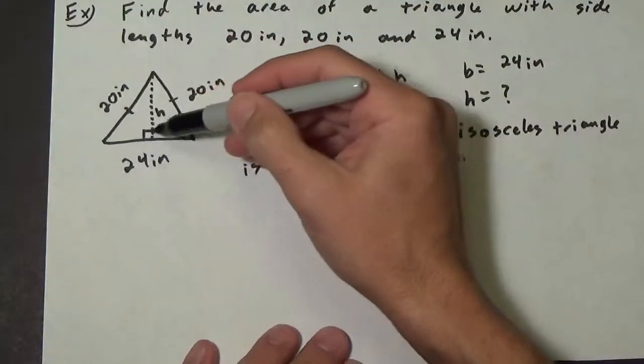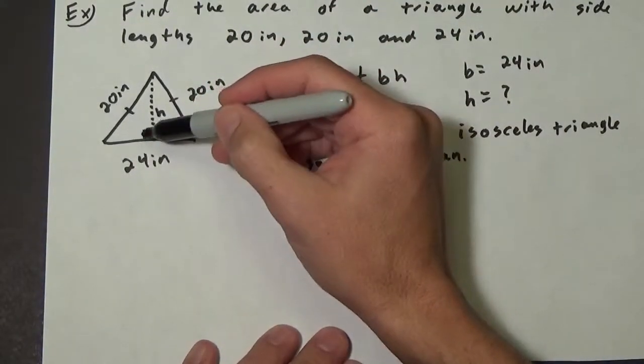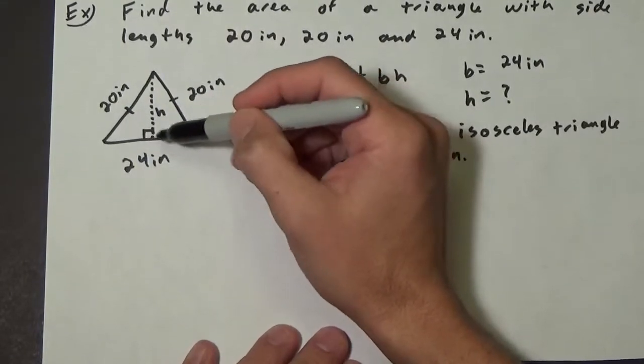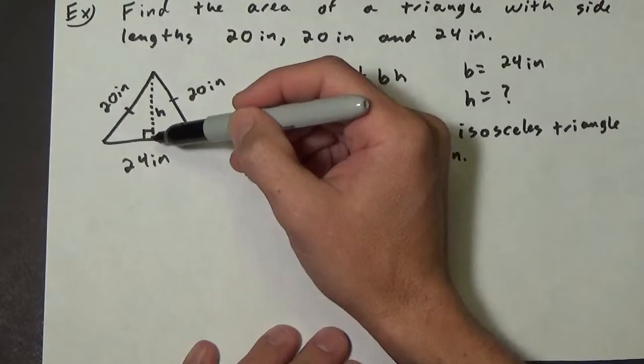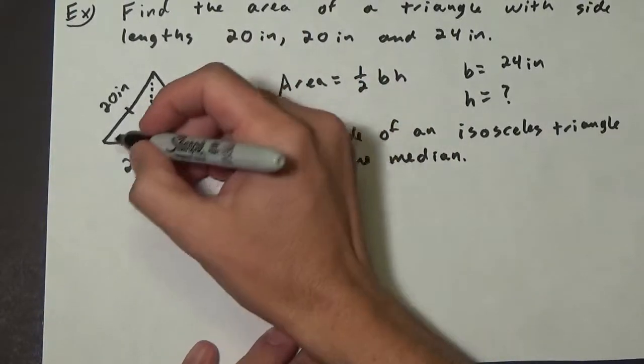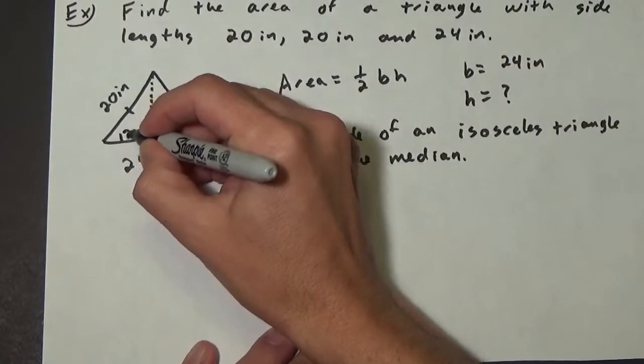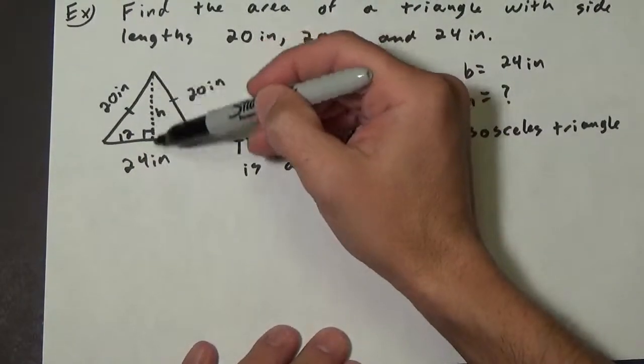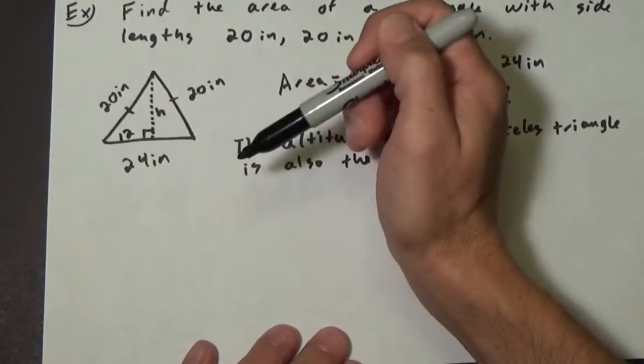So that means if this whole thing is 24, then each of these is 12. This side length here is 12. Notice also that when we draw this altitude, we end up with a nice right angle.